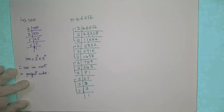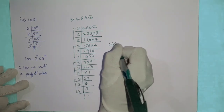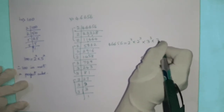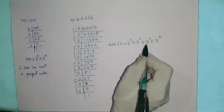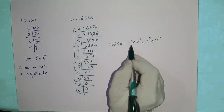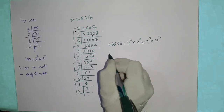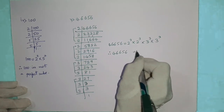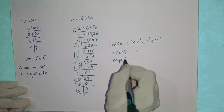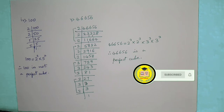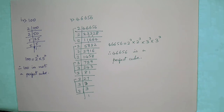So 46,656 equals 2 raised to 3, into 2 raised to 3, into 3 raised to 3, into 3 raised to 3. Since 3 threes are 9, and 9 squared is 81 — wait, 9 times 2 is 18, and 18 times 2 is 36 — meaning 46,656 is the cube of 36. Therefore 46,656 is a perfect cube. In summary, to check for a perfect cube, perform prime factorization: if all prime factors have powers of 3, it is a perfect cube.